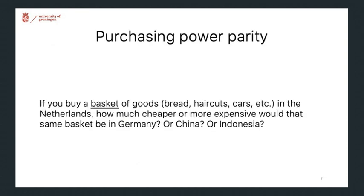Now, this is just two products — bread and haircuts — but this holds more broadly. We'd actually like a single number to tell us how much it would cost to buy a basket of goods in the Netherlands compared to that same basket in Germany, China, and Indonesia. When we talk about a basket of goods, we mean all the products being bought in the country. Recall that GDP covers spending on all these different products — all the bread, all the haircuts, all the education, all the healthcare. We want to know the prices of that basket so that we can compare it across countries.